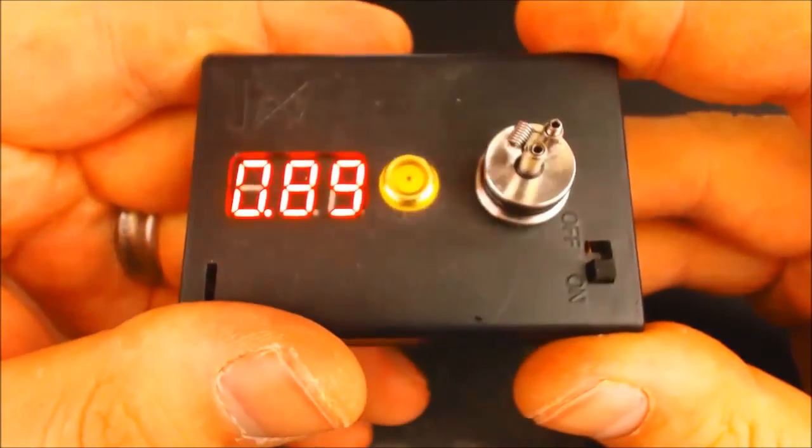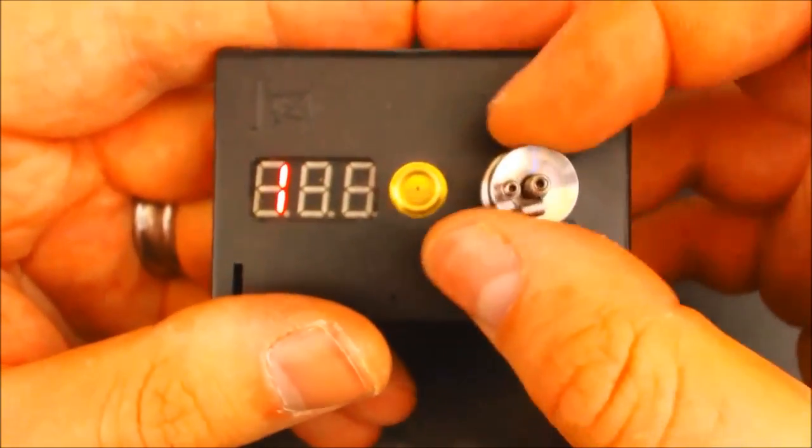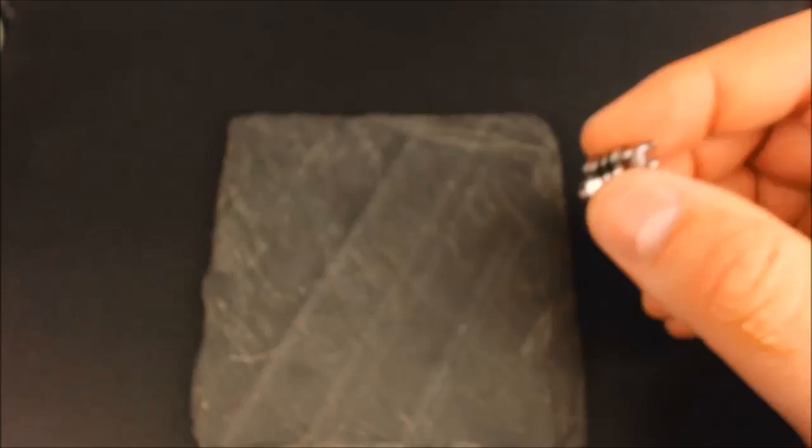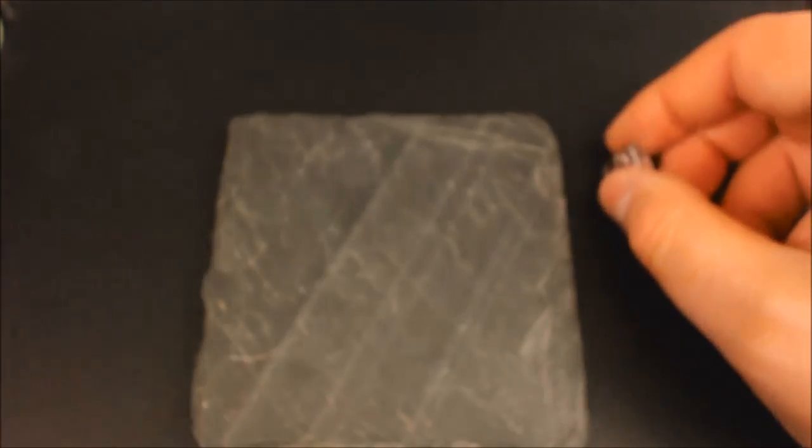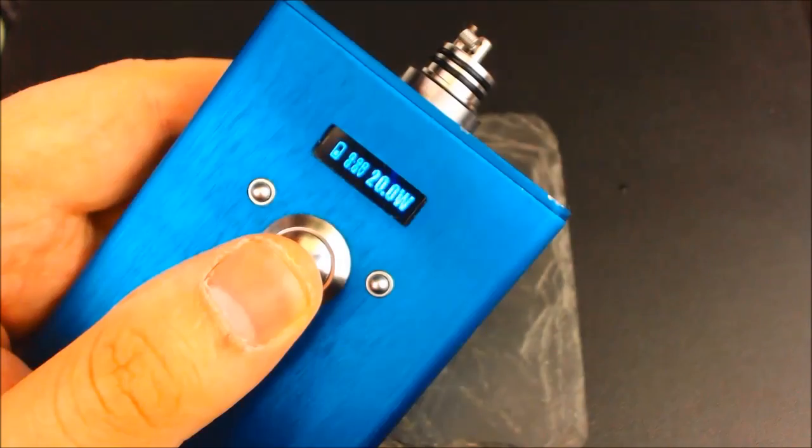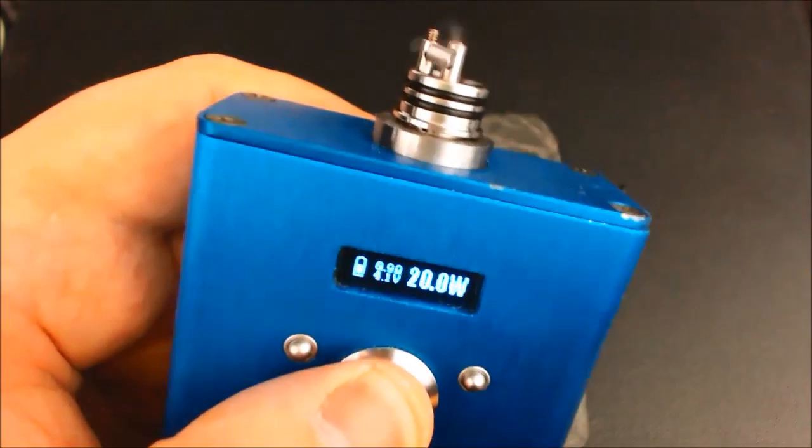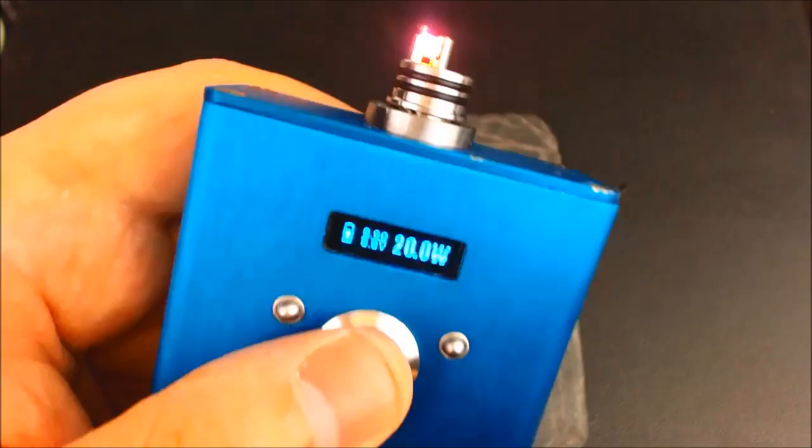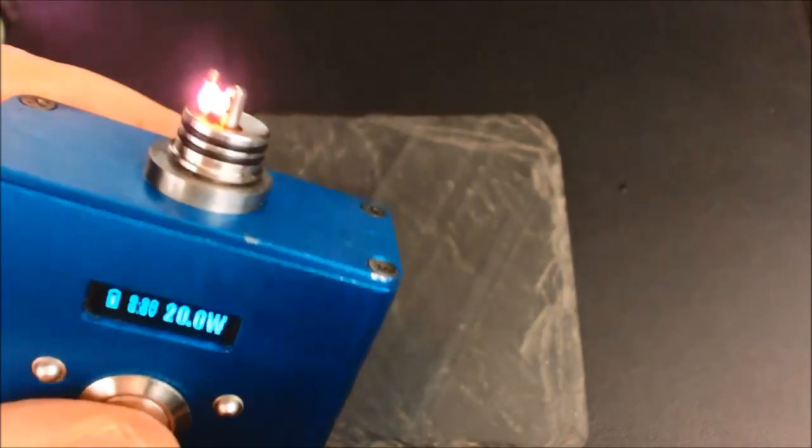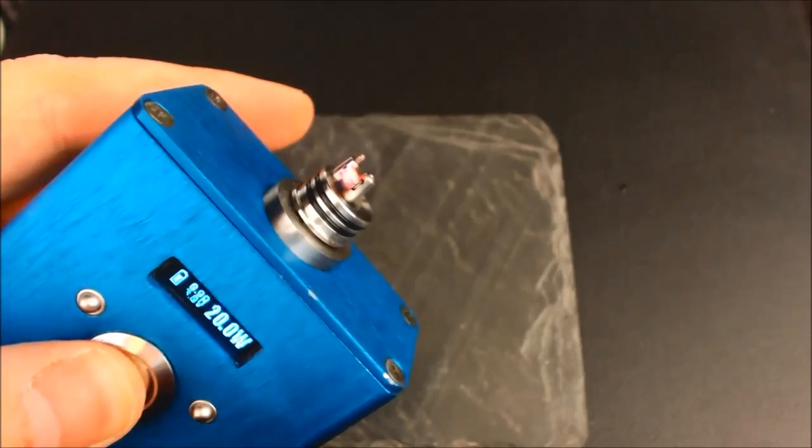Or does it say 0.89? Yeah, it actually says 0.89. Apparently I can't read properly, but that's close to 0.9, which is what we were shooting for. Let's go ahead and drop it on the DNA20 box and see what the DNA20 reads. Sometimes I've noticed a little bit of a discrepancy between the two. Again, 0.9. Fire it up, give her a little test fire here. Everything's looking pretty good.